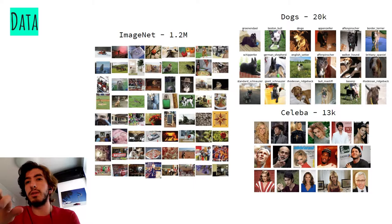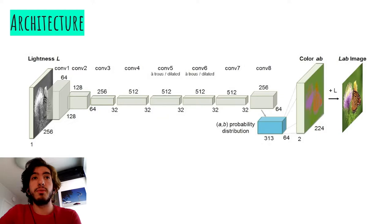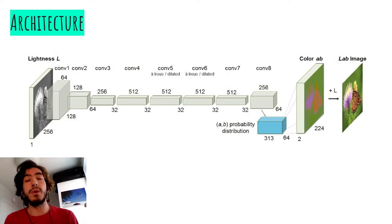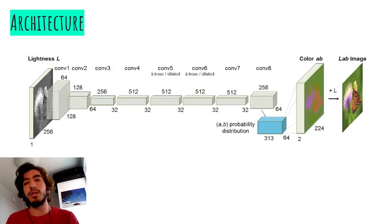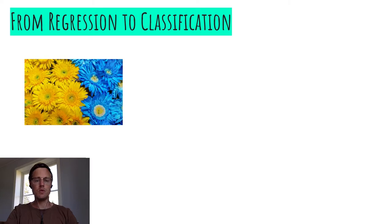As our methodology, we use an architecture that takes a grayscale image as input and predicts the AB color space of that image. To do so, we use an 8-block convolutional architecture where each block contains between 2 and 3 layers.